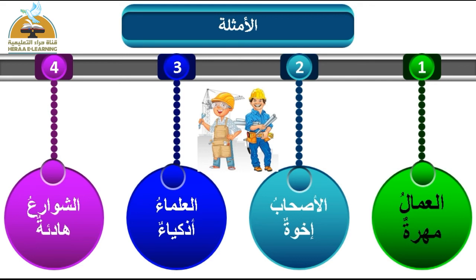المثال الثاني: الأصحاب إخوة. الأصحاب هو مبتدأ، وهو جمع تكسير لأن صورته تغيرت عند الجمع، ويُعامل معاملة المفرد في الرفع. مبتدأ مرفوع وعلامة رفعه الضمة. وإخوة هي الخبر التي أخبرتنا عن المبتدأ، خبر مرفوع وعلامة رفعه الضمة.